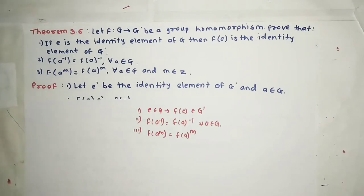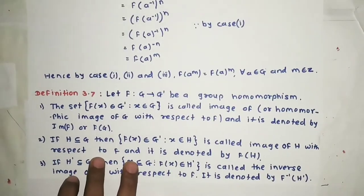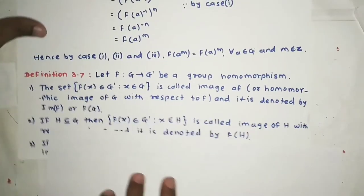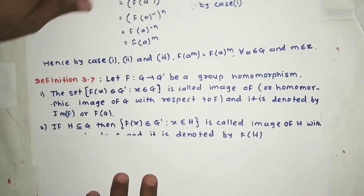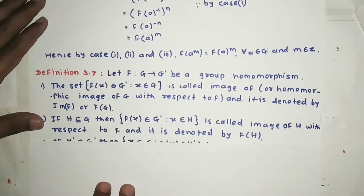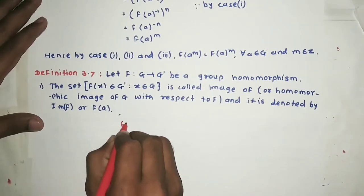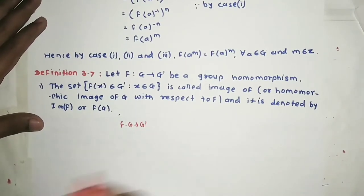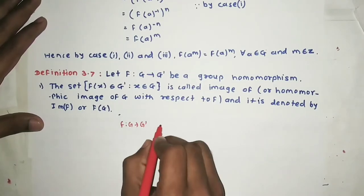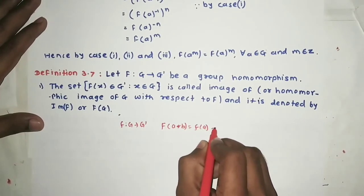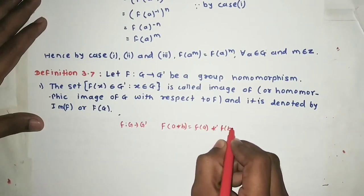In this lecture we are going to see the homomorphic image. Let's start with the definition first. These are important definitions, so listen carefully. Let f from G to G' be a group homomorphism, where f(a * b) = f(a) *' f(b), where * is the operation of G and *' is the operation of G'.